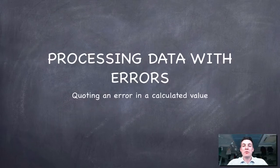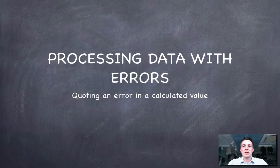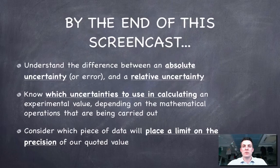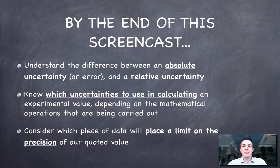Hello and welcome to this film about processing data with errors. It's almost the last of the introductory films at the start of the IB chemistry course, and it follows on from the film where we looked at what errors were and what significant figures were. We'll understand the difference between an absolute error and a relative error, or relative and absolute uncertainties.